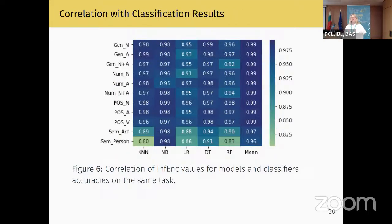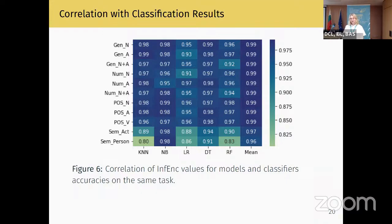One can ask whether this metric is representative of anything at all. We computed the correlation of the INFANC results with classification results, and it is pretty high. We used logistic regression in our dataset selection, represented here as LR, and it shows one of the lower correlations. Naive Bayes (NB) shows the highest correlation with INFANC results. Similar to what we saw before, INFANC correlates more poorly with semantic information, like semantic 'act' and semantic 'person', which can be a signal of the ambiguity of these features.